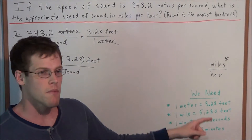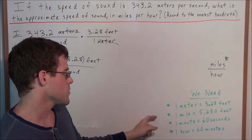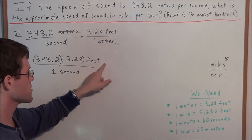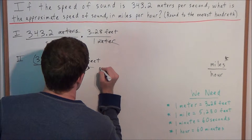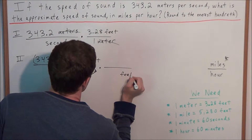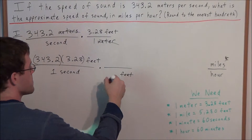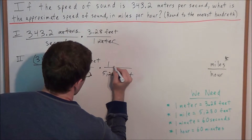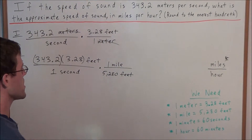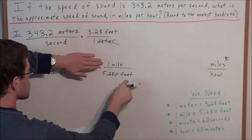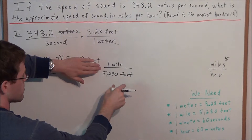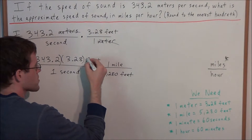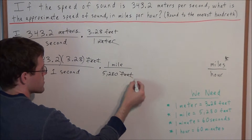Now we're a little closer to miles per hour, so we have to convert from feet to miles. We use the equality: 1 mile equals 5,280 feet. We want feet to cancel out and turn into miles, so we put feet in the denominator. That means we set up 1 mile over 5,280 feet. Remember, these two quantities are equal, so this fraction equals 1 — we're just multiplying by 1 and changing its representation. Feet in the numerator will cancel feet in the denominator.